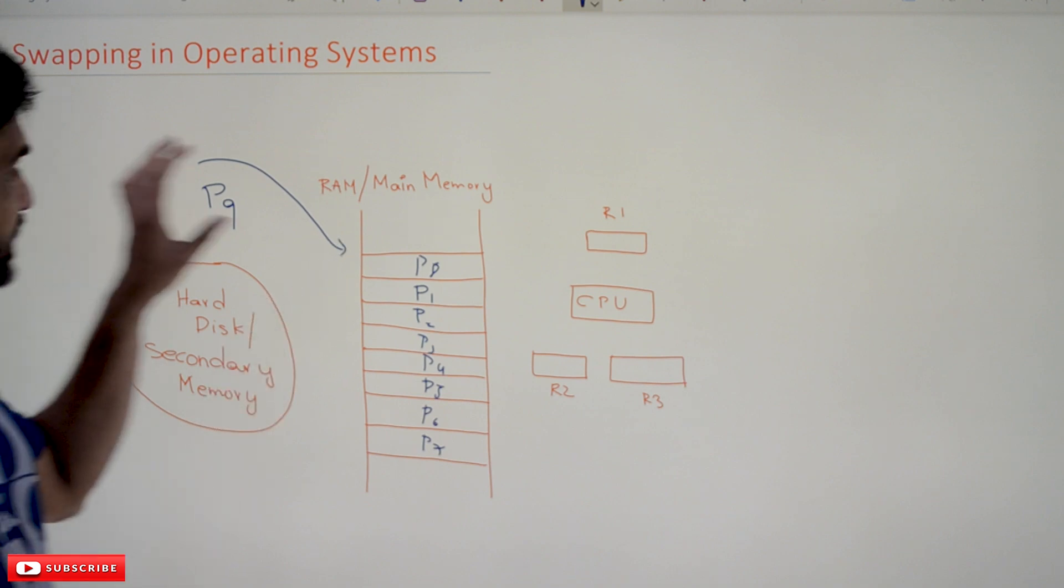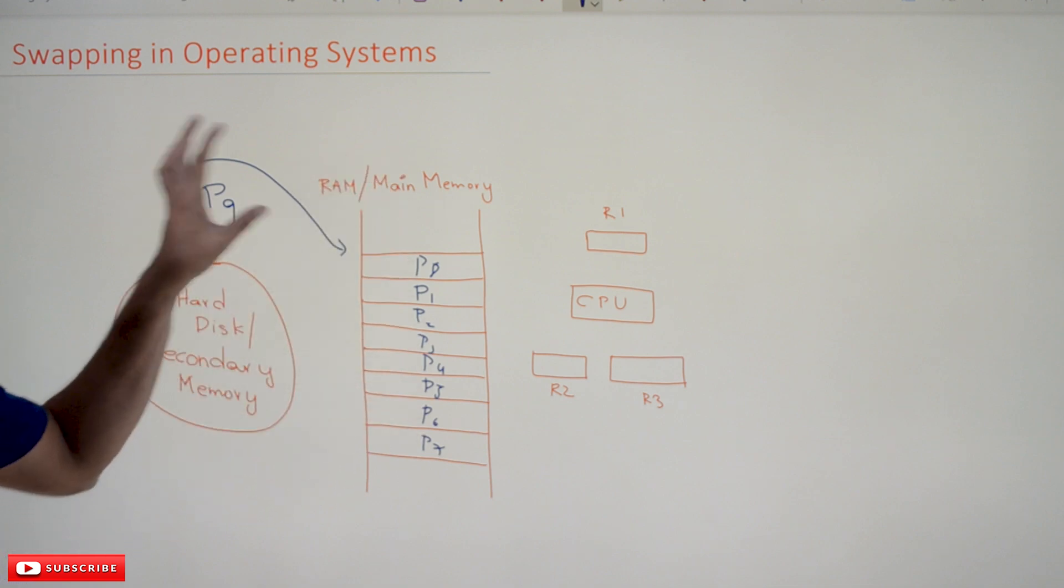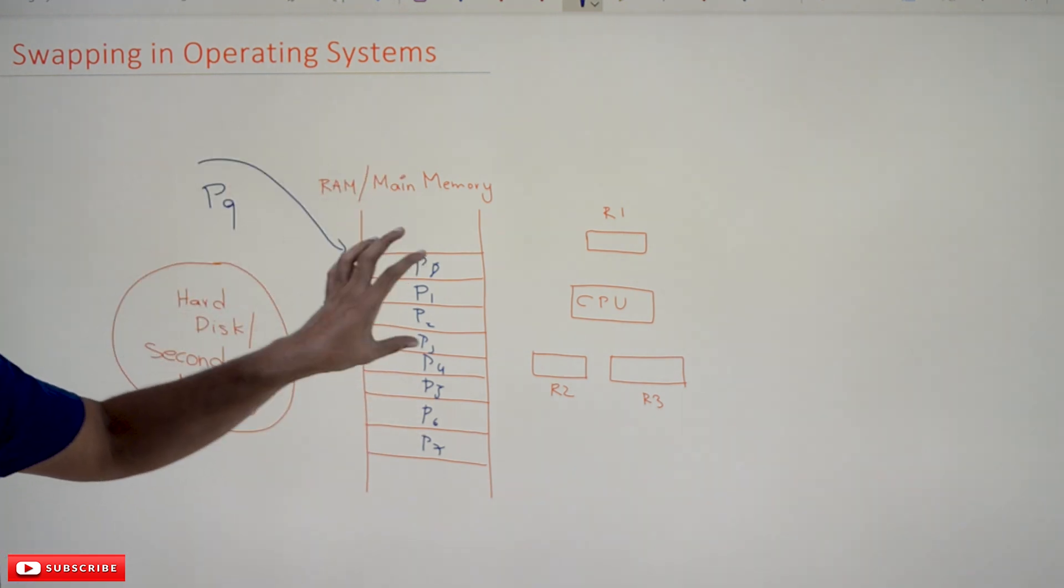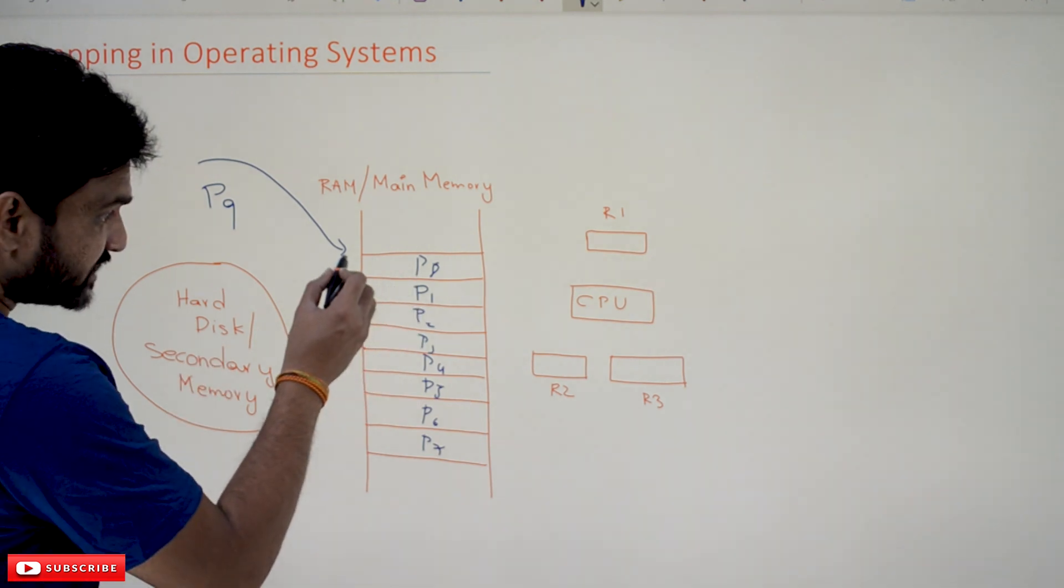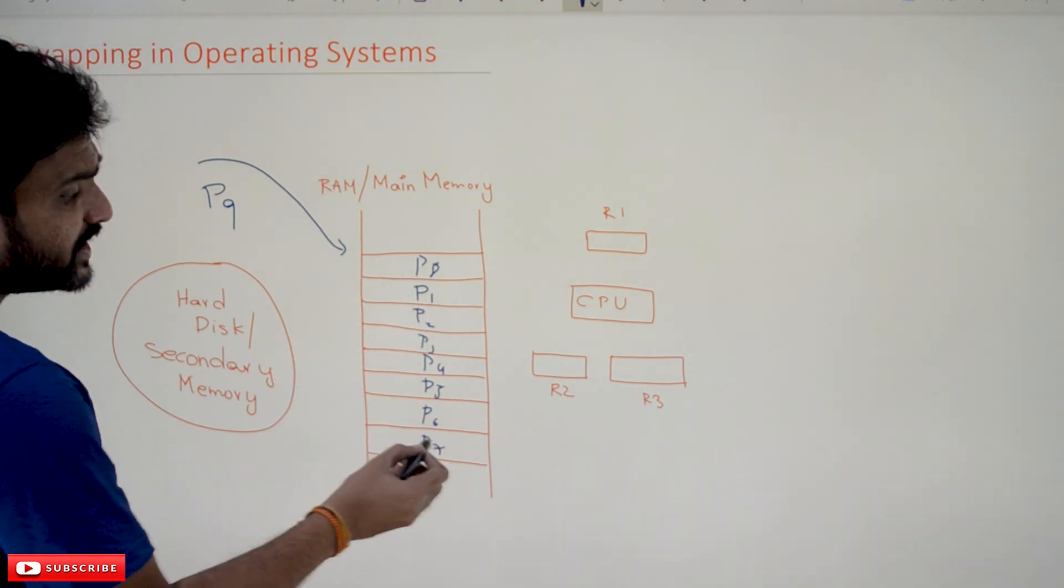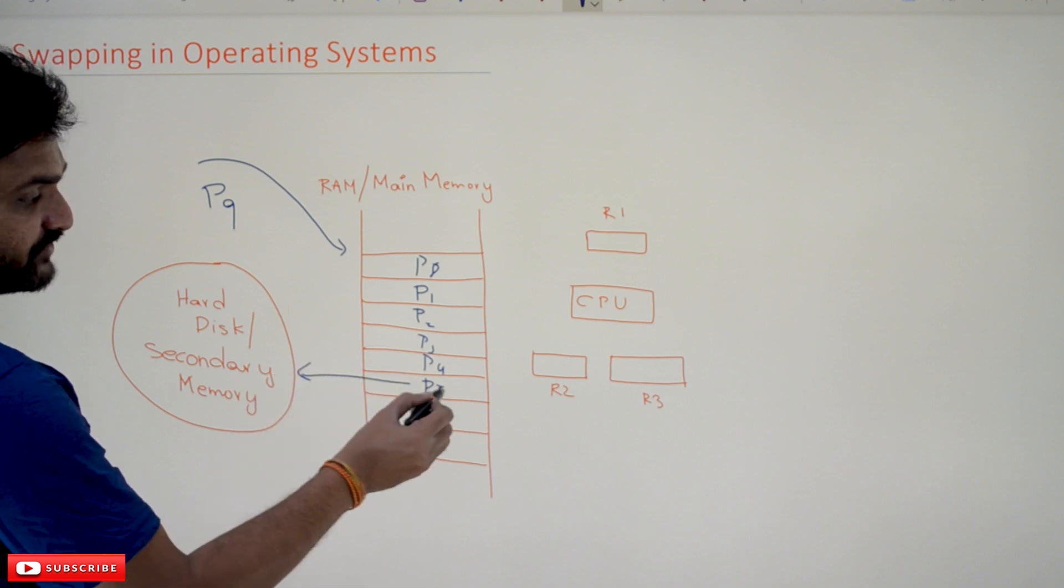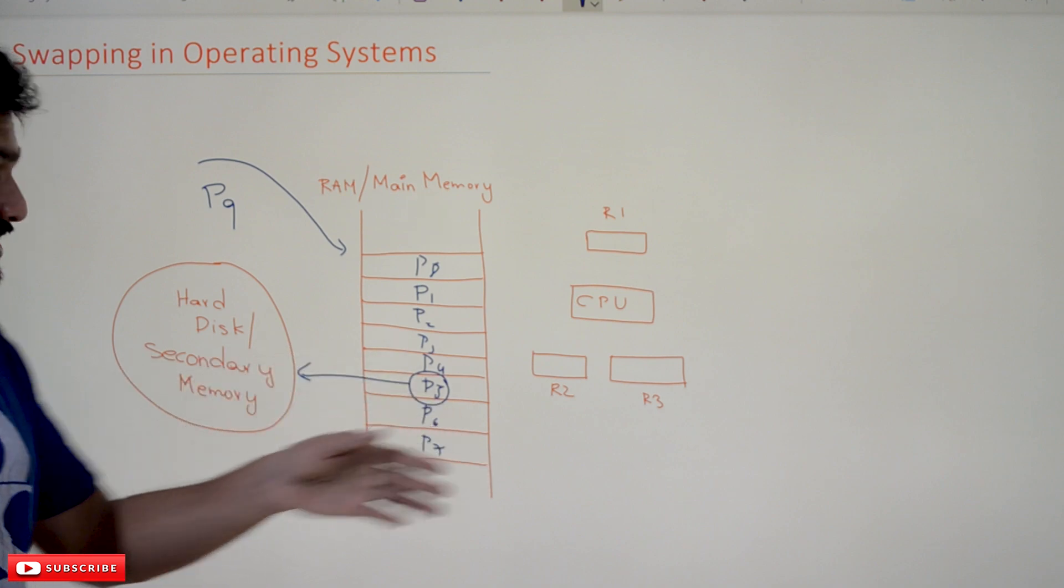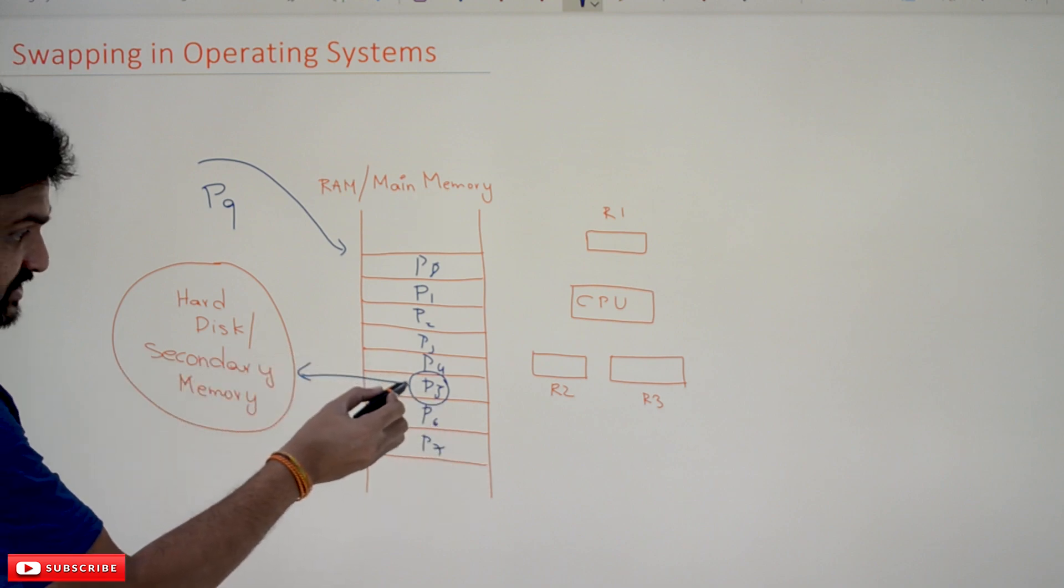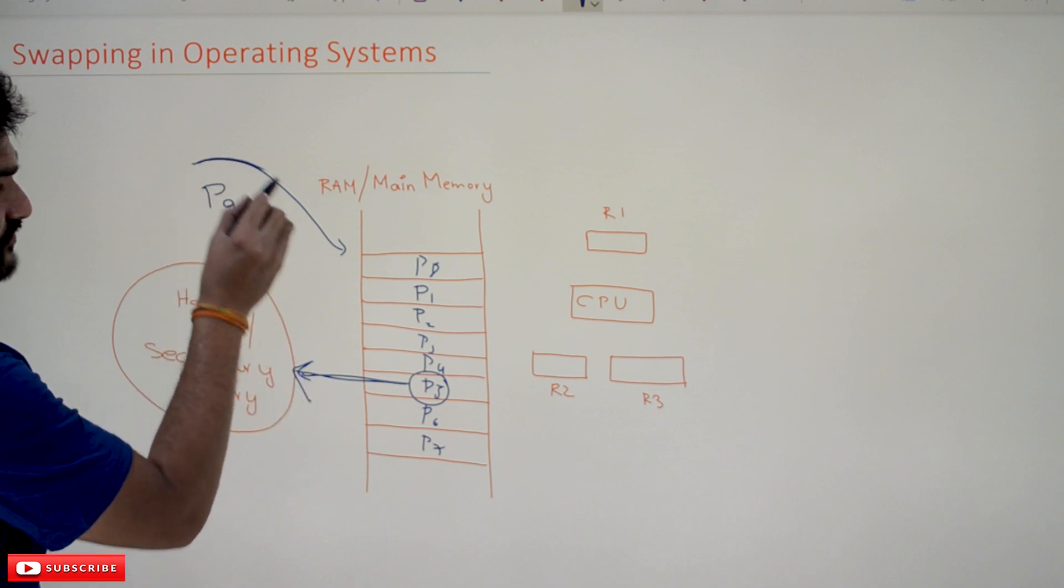But there is no room for this process to get stored in the main memory. What happens is, among all these processes, one of the low priority processes will be shifted back to the hard disk. For example, if you assume that P5 is a very low priority process, this process will get shifted to the hard disk, and this new process will get shifted onto the main memory.